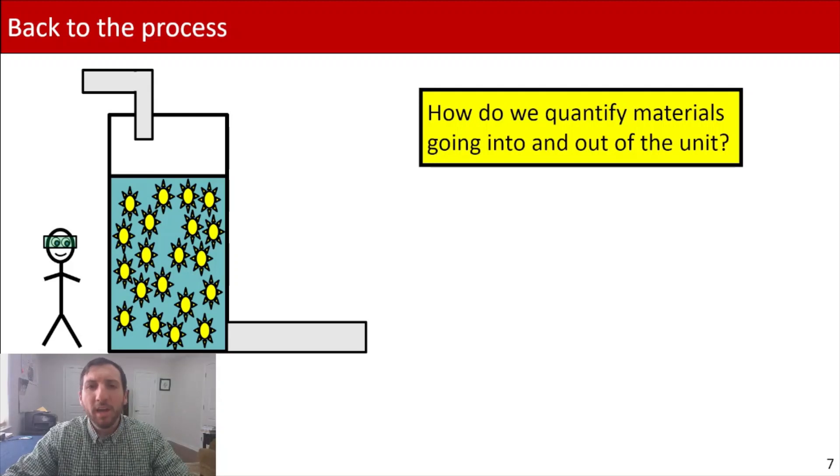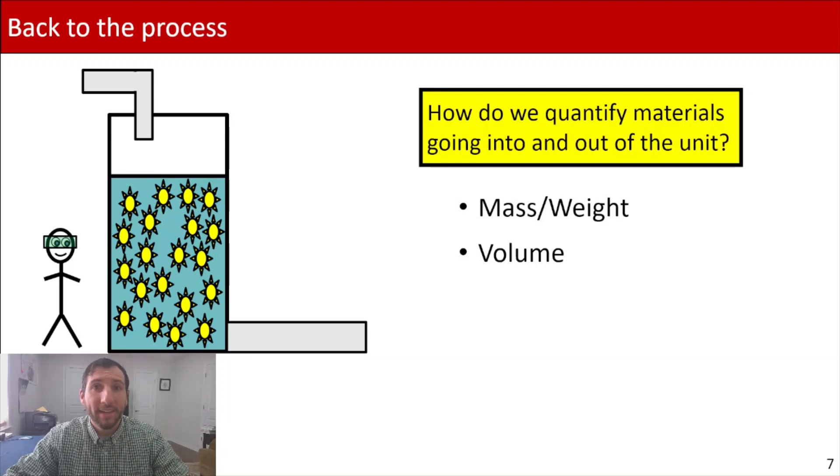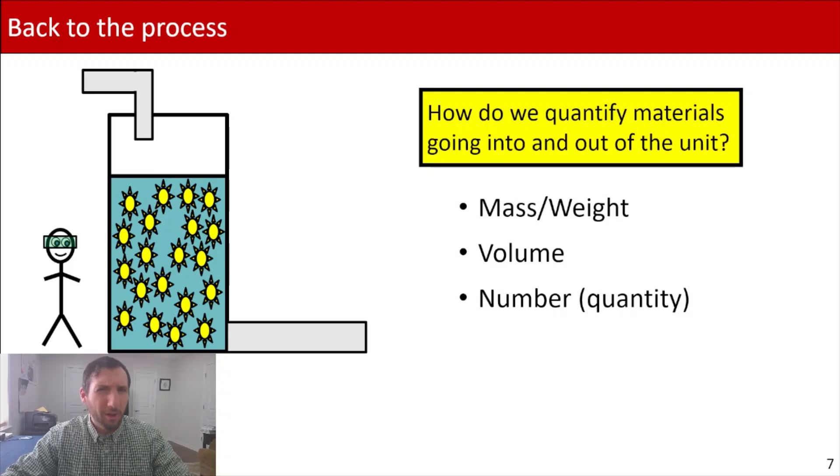So we have to identify something that we can measure that's going into and out of the unit. So we've got a couple of options. We can look at the mass or the weight of material that's going into and out of our system. We could be looking at the volume of material going in and out. We could look at the number or the quantity, which is a little bit more challenging to measure.